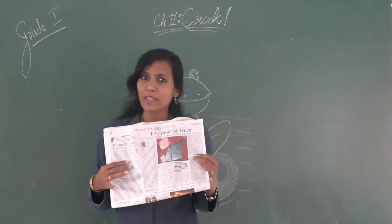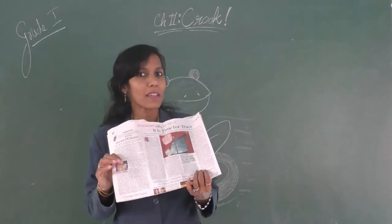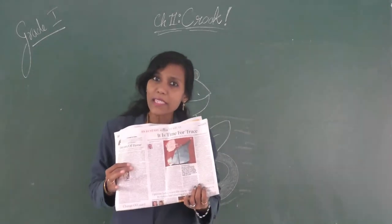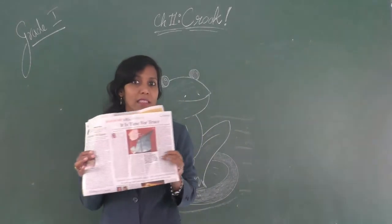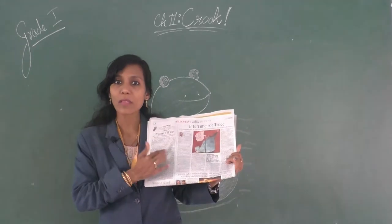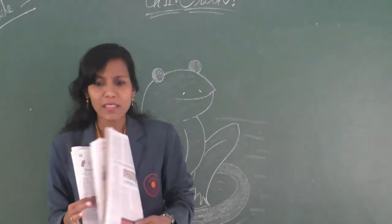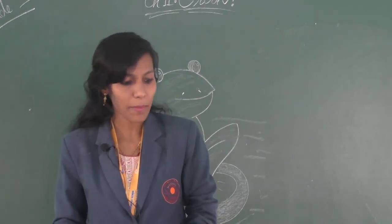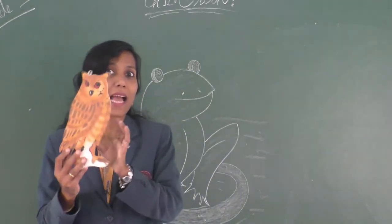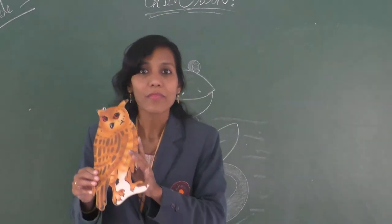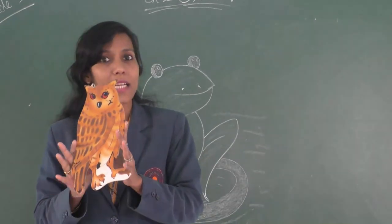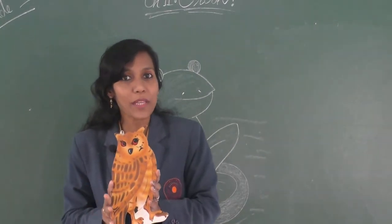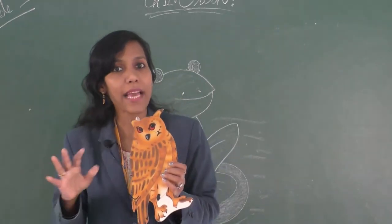We all know birds go in search of food. So these birds go there thinking they will find some food. But to their disappointment, they see a newspaper — something scribbled with black ink. They are curious; they have no idea what it is all about. At that moment, an owl enters and tells them: the paper you are seeing is none other than a newspaper, and human beings use it to get information about events in and around their area.